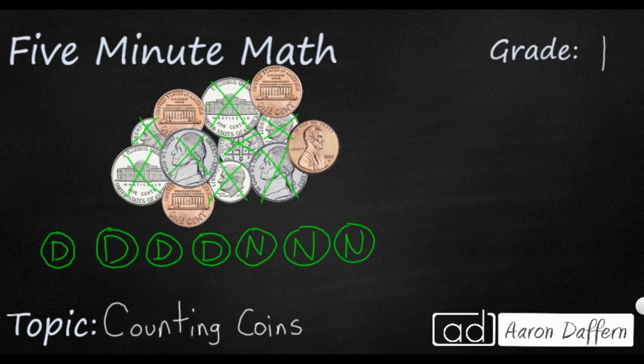And then the last coin that we're going to look at is the smallest value. And that's the easiest one to find because it's the only one that's copper. It's these pennies right here. So we're going to put a P and then another P. And then we've got two tails back here. That's a P and that's a P. So I have a collection of coins that is pretty even. It's four dimes, four nickels, and four pennies.